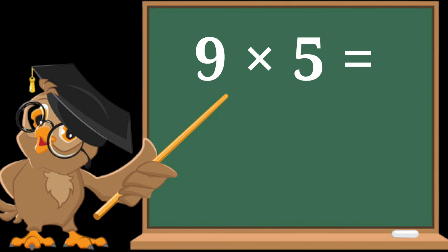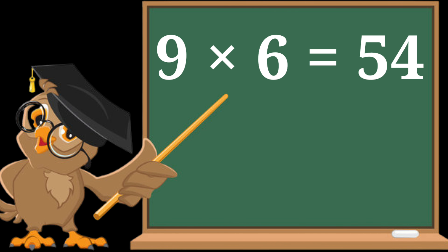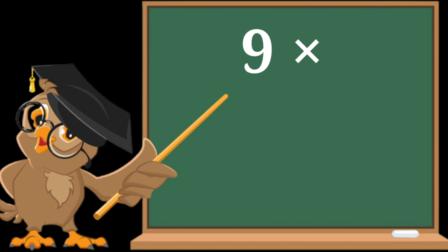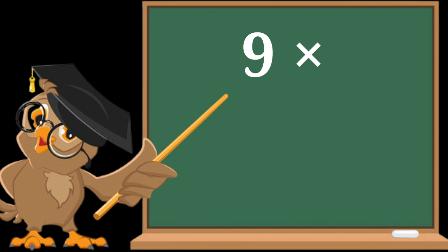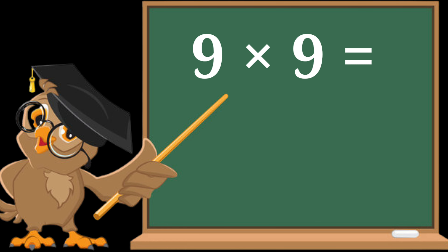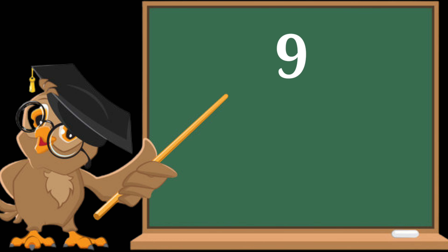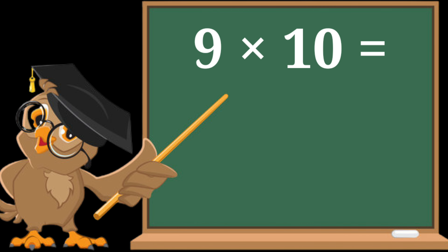9 sixes are 54. 9 sevens are 63. 9 eights are 72. 9 nines are 81. 9 tens are 90.